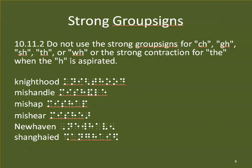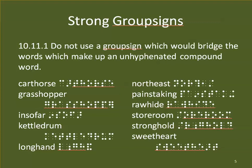One rule that limits the use of these contractions: we do not use the strong group signs for CH, GH, SH, TH, or WH — those H contractions — or the strong contraction for THE when the H is aspirated, when you can hear the H. So in words like knighthood, mishandle, mishap, mishear, newhaven, and shanghaied, we're not using contractions that could otherwise be used because we are pronouncing the H.